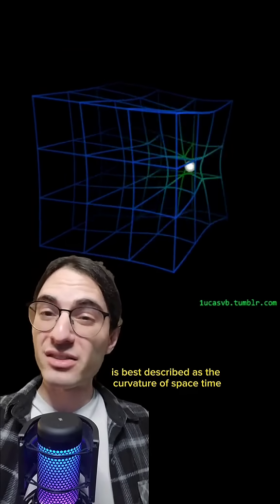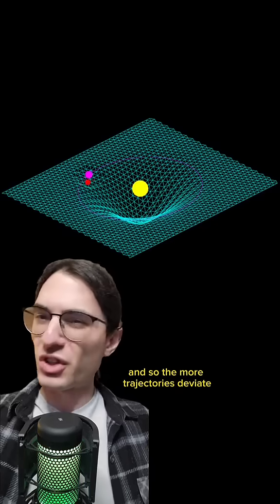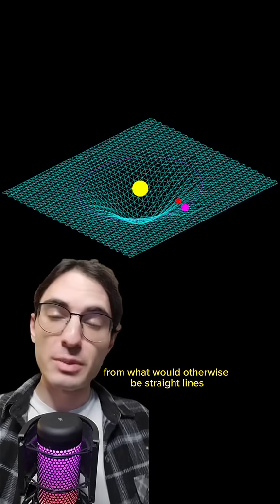Thanks to Einstein, we now know that gravity is best described as the curvature of space-time. The bigger the mass, the more space-time is bent, and so the more trajectories deviate from what would otherwise be straight lines.